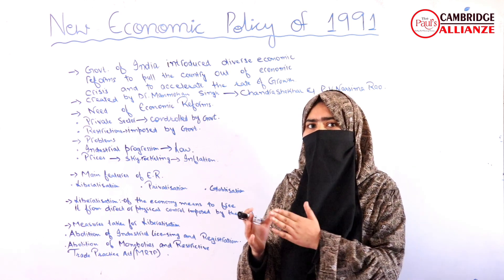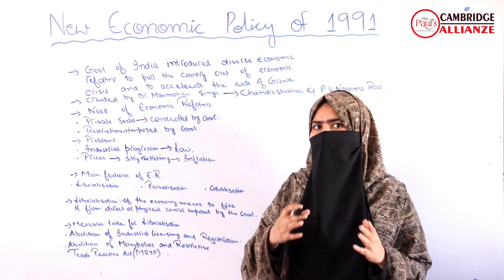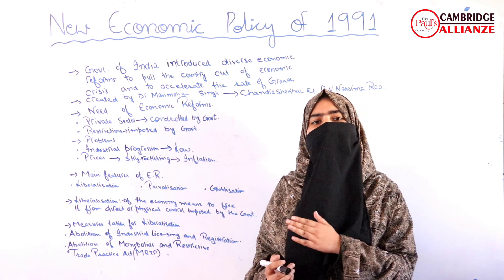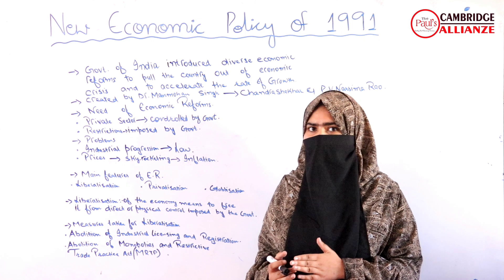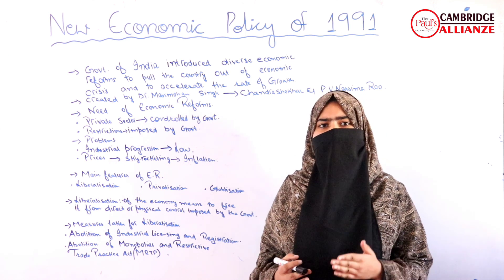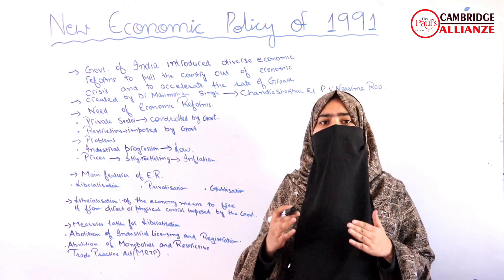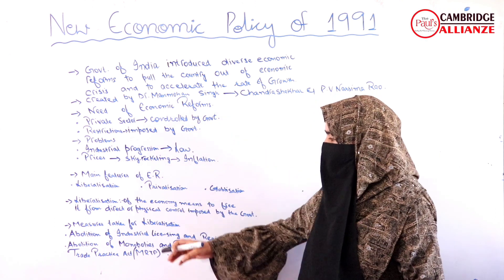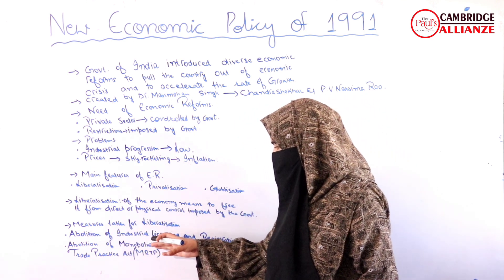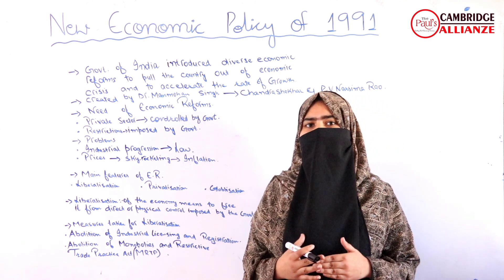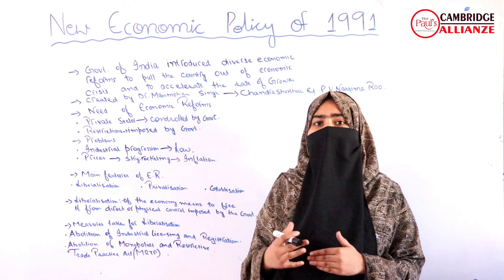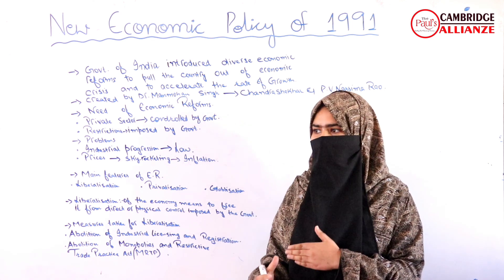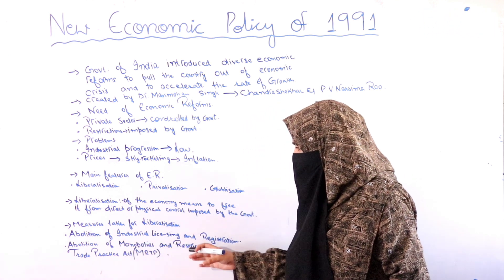Before 1991, if we look at the 1956 policy, the license system was very important under the new industrial policy. The government exercised price control over the economy across various sectors. So to remove these restrictions through liberalization, the first measure was the abolition of industrial licensing and registration. The second part was the abolition of monopolies and restrictive trade practices.